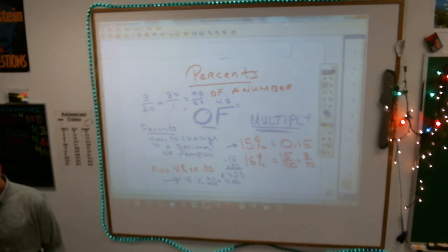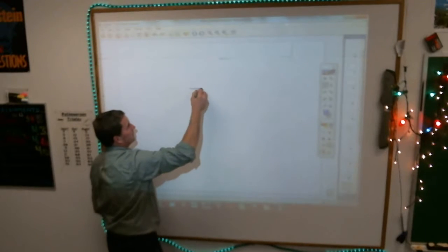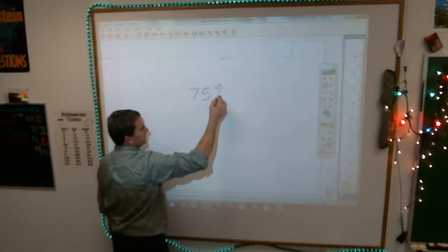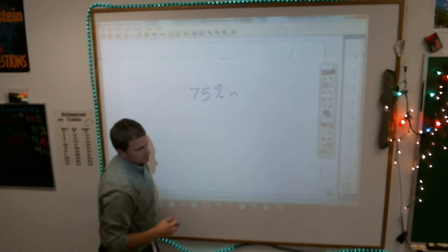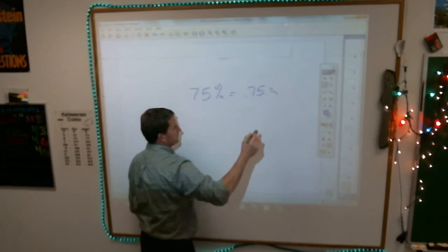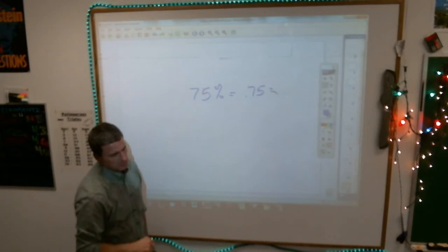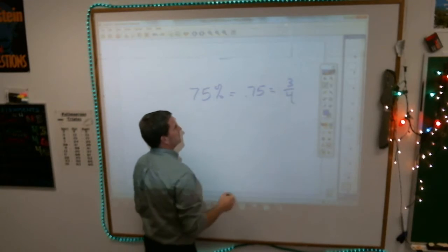But maybe the percent is 75%. Two ways to make 75%. What is 75% as a decimal? 0.75. What is it as a fraction? You should know it's 75%. Three-fourths. Right.